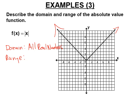The range is not all real numbers. The graph points up on both sides, so y will always be greater than or equal to zero. The range is all the possible y values, which is y ≥ 0.